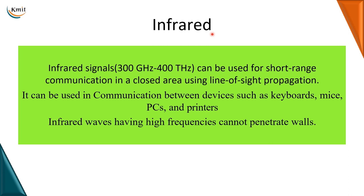Infrared signals range from 300 gigahertz to 400 terahertz and can be used only for short-range communication within a closed area using line-of-sight propagation. They are used in communication between devices such as keyboards, mice, PCs, and printers. Infrared waves have high frequencies, cannot penetrate walls, and also use line-of-sight propagation. This concludes the topic of unguided transmission media.